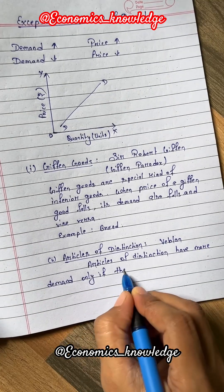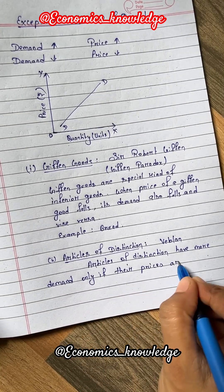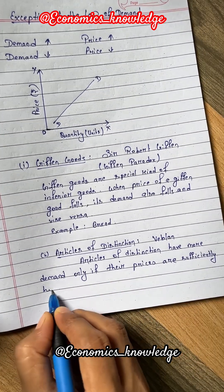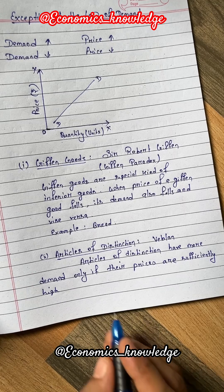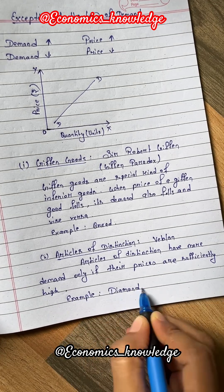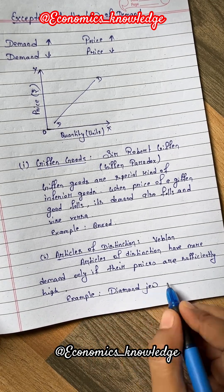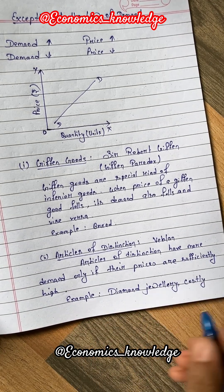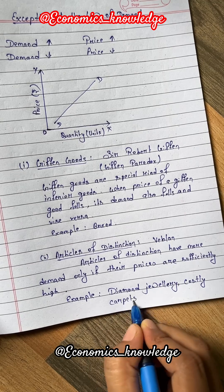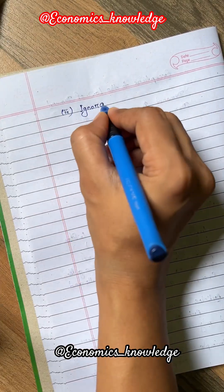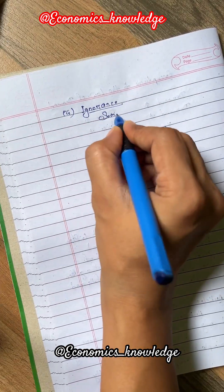Number 2, Articles of Distinction. This exception was first discussed by Veblen. According to him, Articles of Distinction have more demand only if their prices are sufficiently high. For example, diamond jewelry, costly carpets, etc.